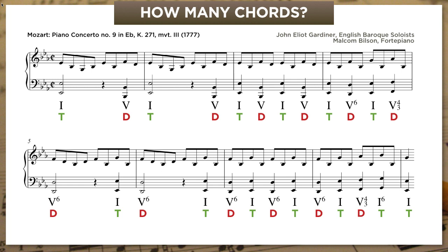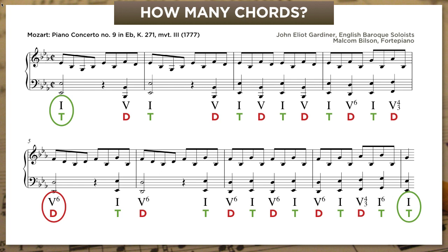But when I ask students to sort of squint their ears and tell me how many chord changes they really feel here, I often get a different answer — three. Another way of getting at this is to ask them where they feel the most important harmonic moments are, and again they'll almost always say three. So let's listen again and see if you can find those three crucial moments. If you're like many of my students, you've zeroed in on three important harmonic moments — the first downbeat with its tonic emphasis, the fifth downbeat with its dominant emphasis, and then the last downbeat, which is tonic emphasis again.